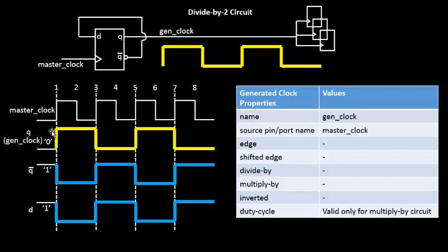Combining these two observations, can we derive some properties? The same generated clock properties — which had a divided-by-2 option — can instead be defined with respect to master clock edges. It says 1, 3, 5, meaning: the generated clock first rising edge arrives at the first edge of the master clock, the falling edge arrives at the third edge, and the next rising edge arrives at the fifth edge.